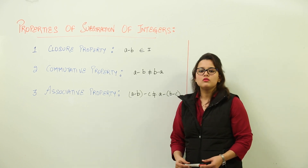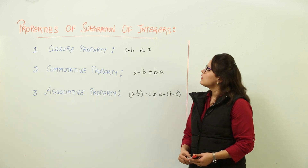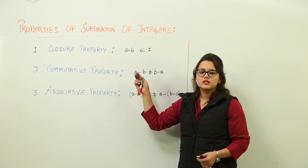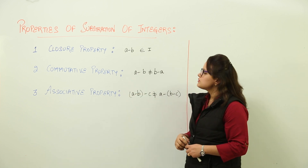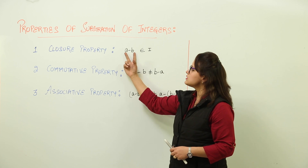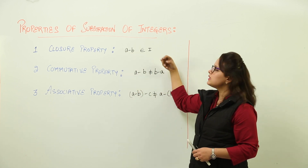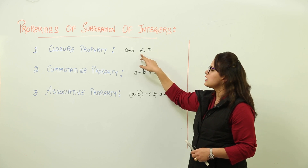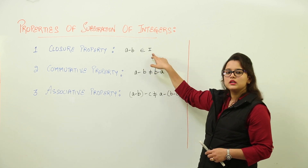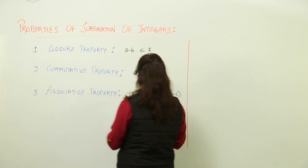Moving on with the properties now, we have properties of subtraction of integers. While you are subtracting two integers, these are the three properties. The first one is the closure property, which says that if two integers are subtracted, the subtraction will give us a result which will be an integer only. The subtraction would belong to the integer set, where i represents the integer set.